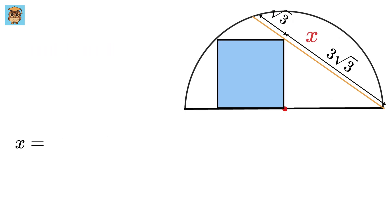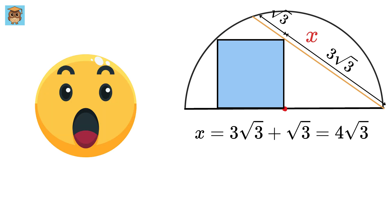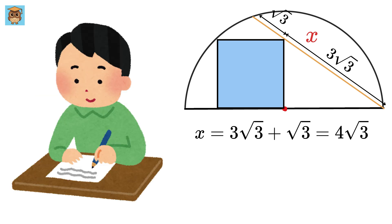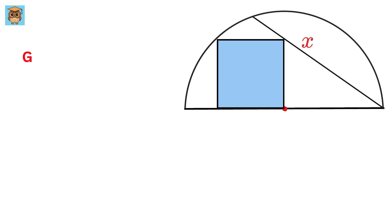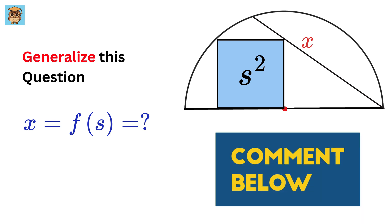So the value of x will be 3 root 3 plus root 3 or 4 root 3 units and that's it. Isn't this an awesome question which teaches us a lot of concepts? So if you were able to follow the method then I have a challenge for you. Let us generalize this question. If the area of this square is s square then find the value of x in terms of s and comment your answer below.